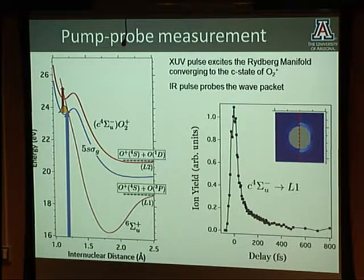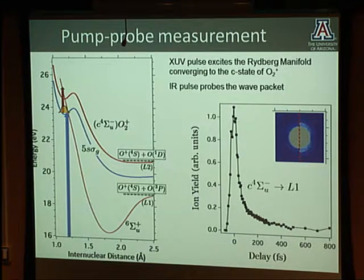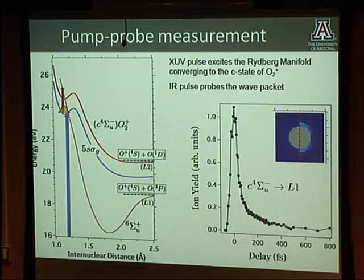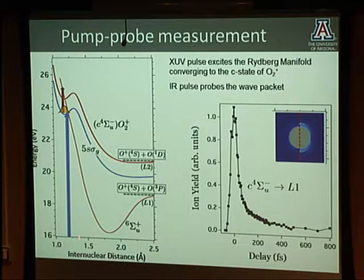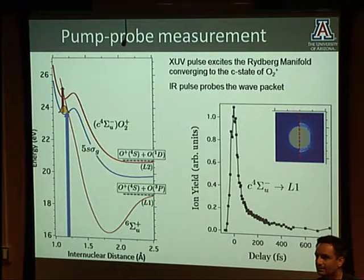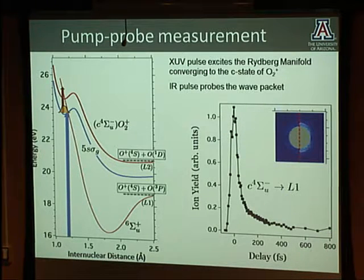The probe pulse is about 35 femtoseconds wide and the excitation pulse is about 3–4 femtoseconds. To define time zero, we do a cross-correlation: we pick an atom like helium, do a cross-correlation, and see where the ionization maximizes. That cross-correlation peak tells us where our zero is.